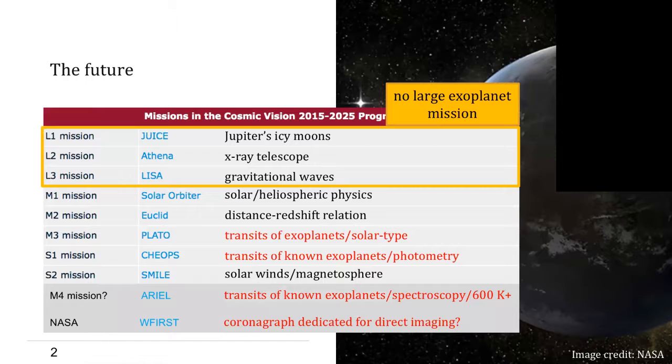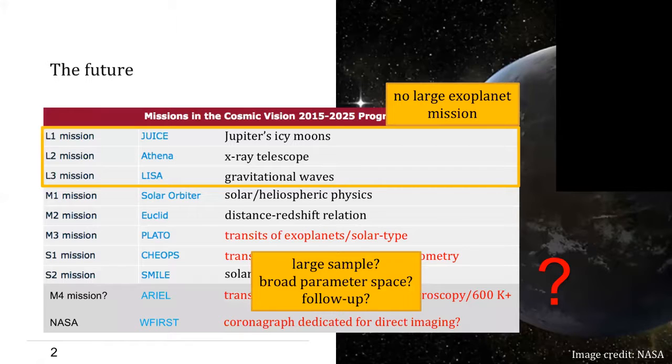Certainly, all these missions will be groundbreaking steps for a variety of astrophysical research topics, but after all, I think it is unclear how many small-sized exoplanets will be uncovered, which are both covering a broad range of host star spectral types and orbital separations, and at the same time, are suitable for follow-up observations with transit or secondary eclipse spectroscopy.